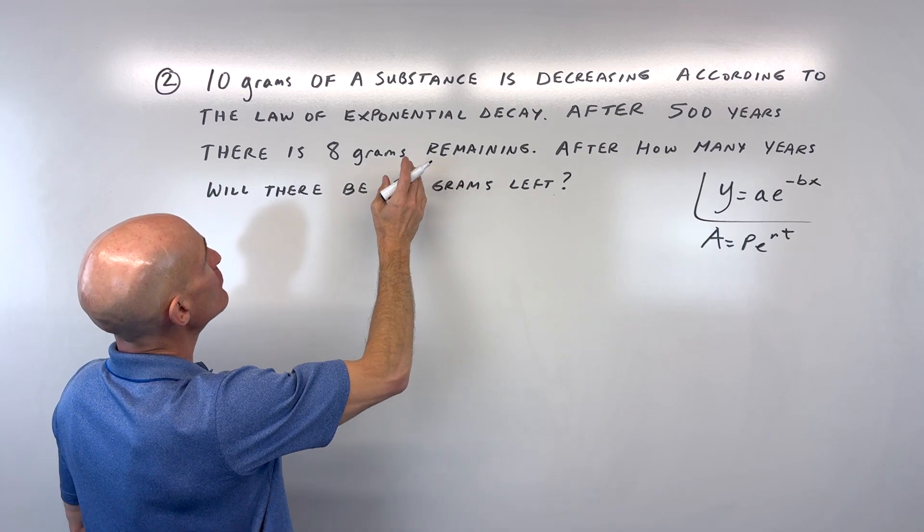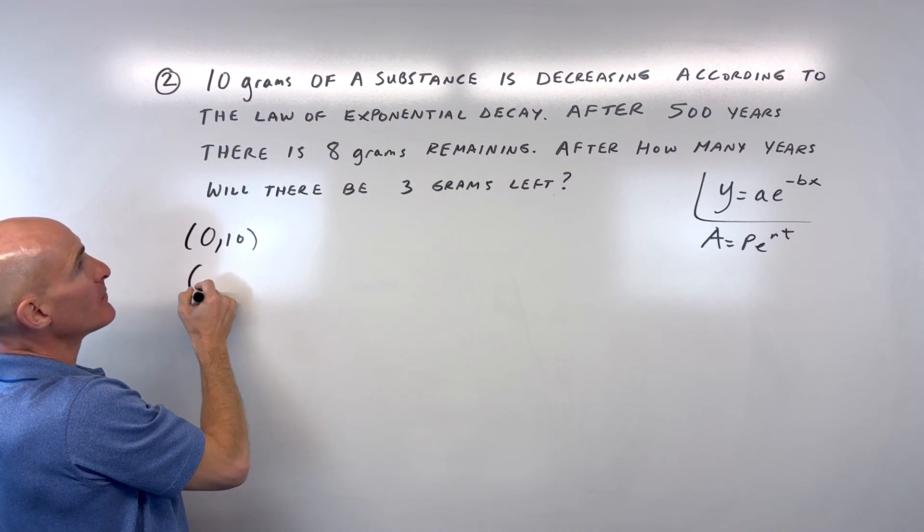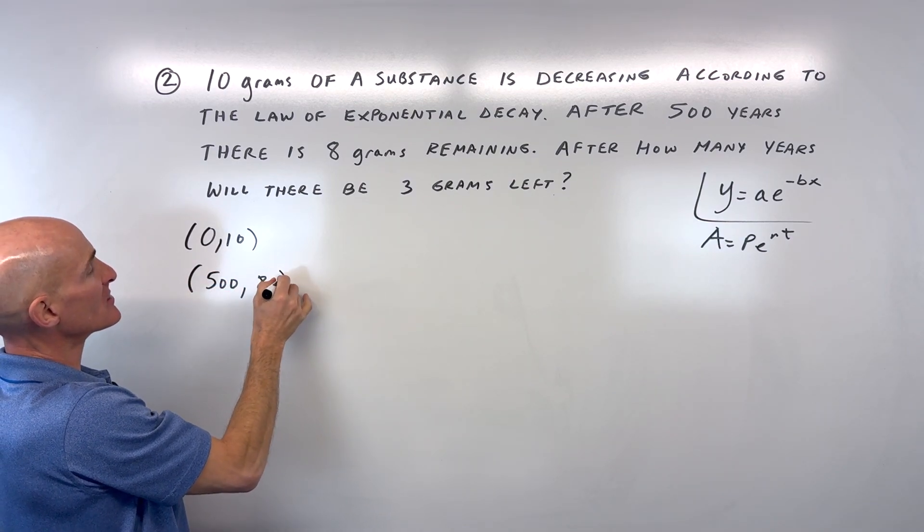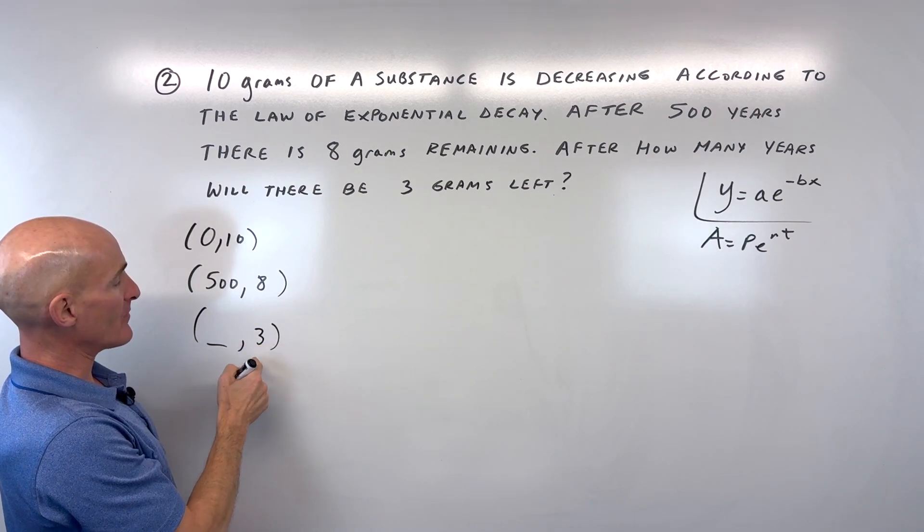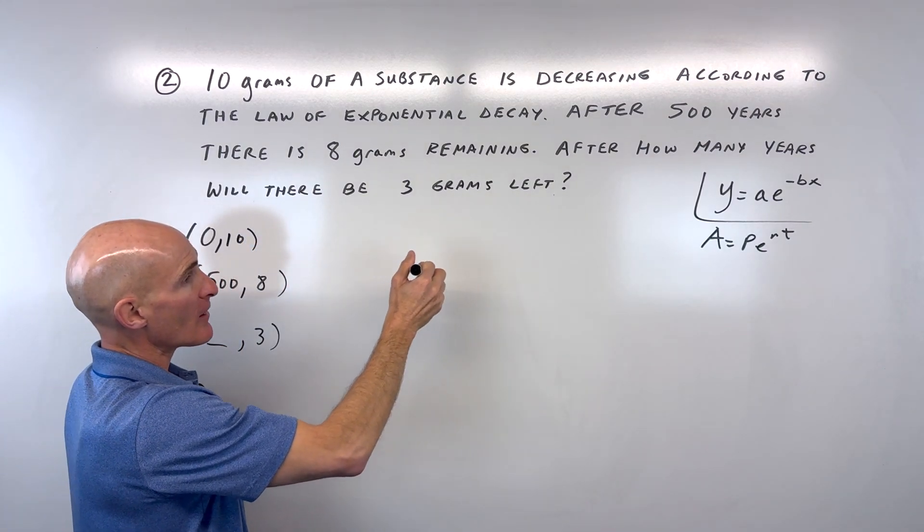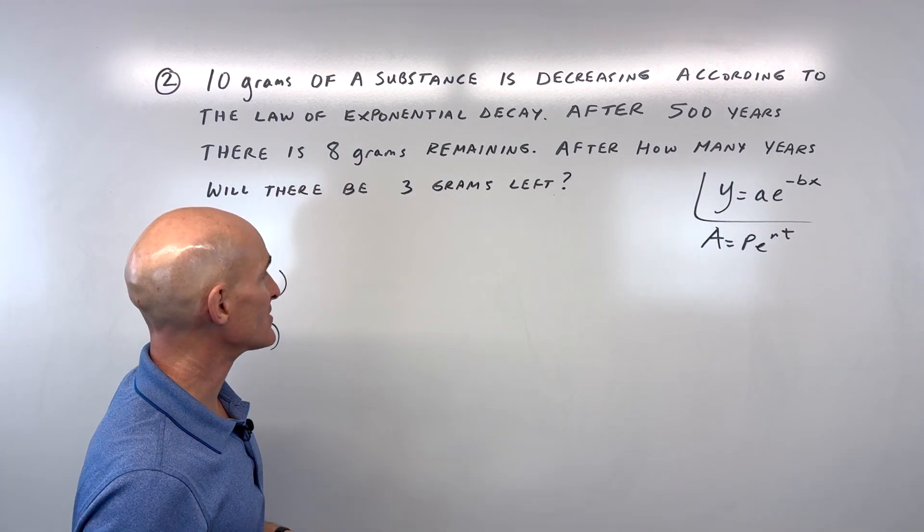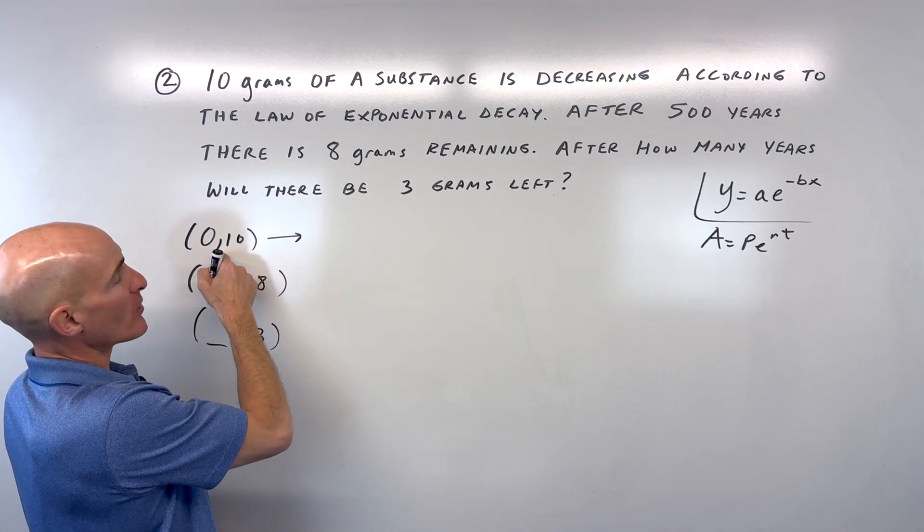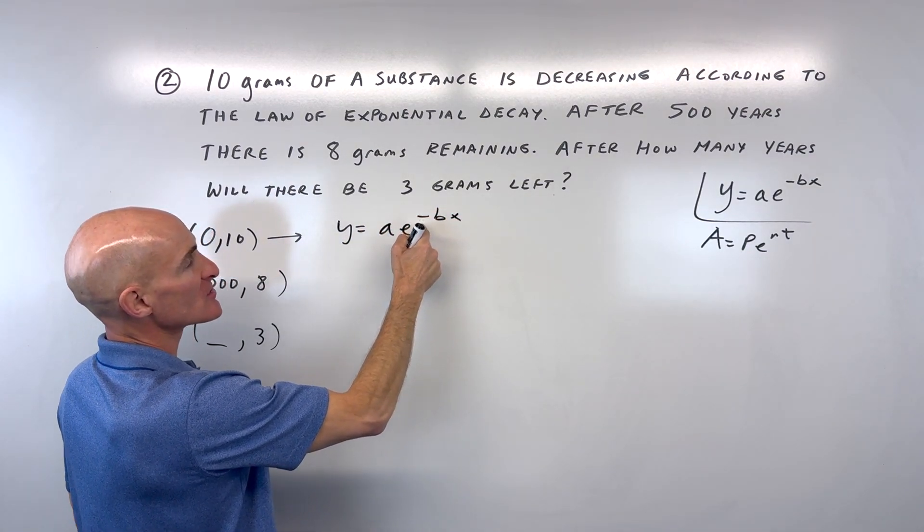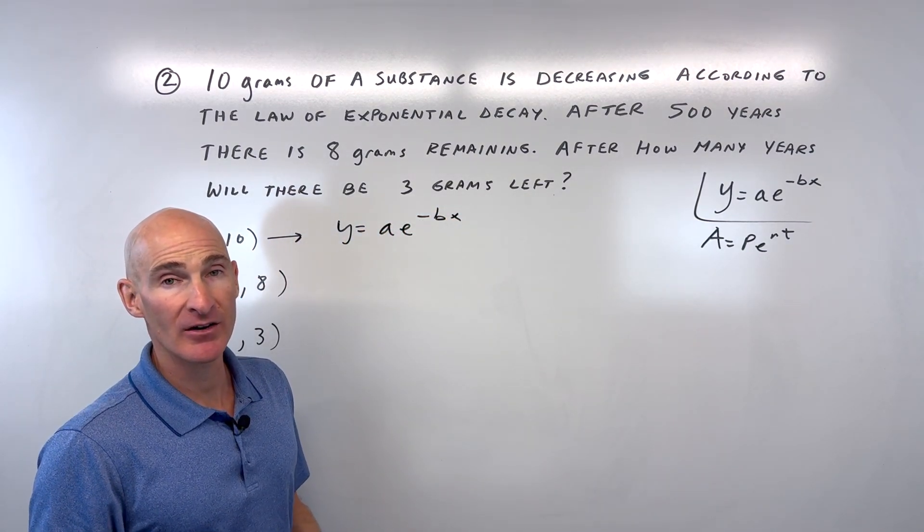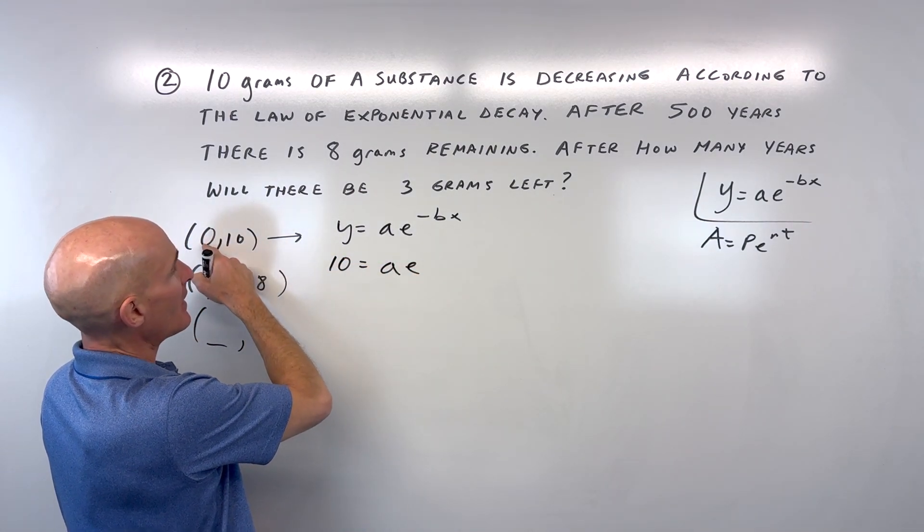For this problem we have two points: at time 0 there's 10 grams, and after 500 years there's 8 grams. We want to find after how many years there are 3 grams. I'll start with the point where x is 0. So y equals ae to the negative bx - notice the negative means it's decay.